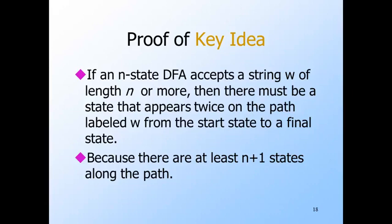The number of symbols in the string is the number of arcs, and there's always one more node than arcs in the path — that's why there will be n+1 states for a string of length n. Now, if there are only n different states and there are n+1 states along the path, then two states along the path must be the same. That's called the pigeonhole principle.